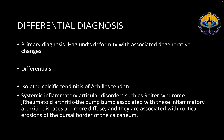With the primary diagnosis of Haglund's deformity with associated degenerative changes, the other differentials considered were isolated calcific tendinitis of the Achilles tendon, which was less likely in our case, or systemic inflammatory articular disorders such as Reiter syndrome and rheumatoid arthritis. However, these inflammatory arthritic diseases are more diffuse and are associated with cortical erosions of the bursal border of the calcaneum.